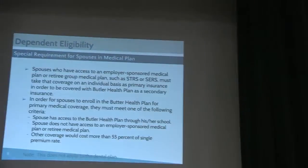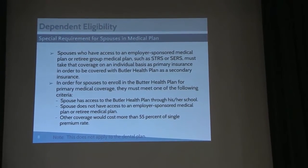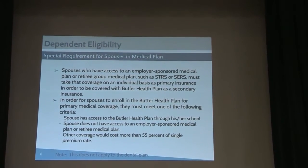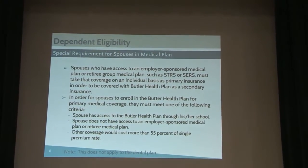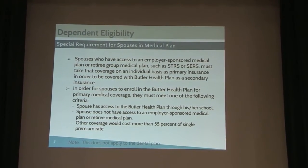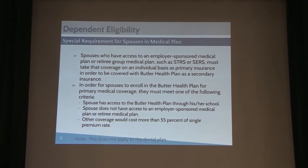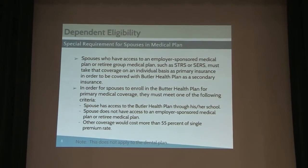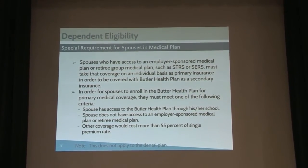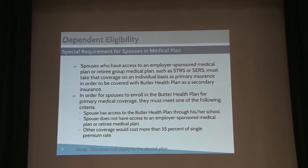There are some ways that your spouse can be covered. Number one, if they don't have employment or access to other insurance, they could be covered primarily under ours. If they have access to another plan but have to pay more than 55% of the individual premium, they would be able to be covered under our plan. If you are going to cover your spouse as primary on our insurance, the important thing is you will be asked to submit a coordination of benefits worksheet.